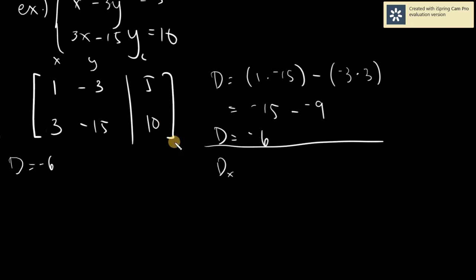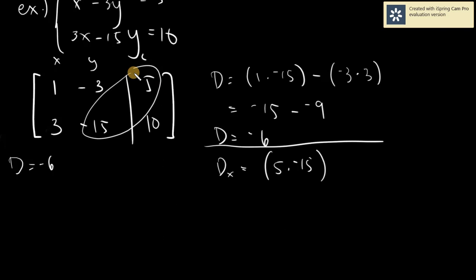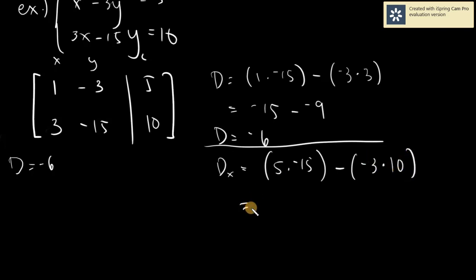D sub x — cover x, and replace x with the constants 5 and 10. For D sub x, we take 5 times negative 15 minus negative 3 times 10. That gives negative 75 minus negative 30, which gives us negative 45. So D sub x is equal to negative 45.